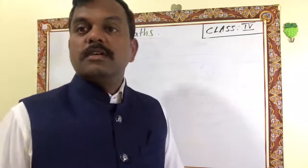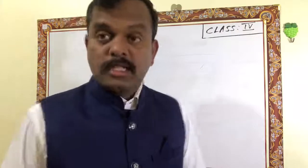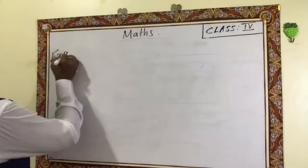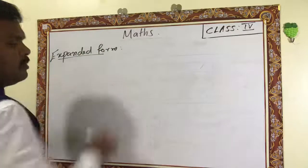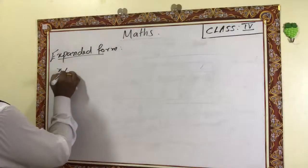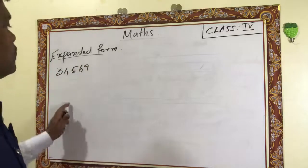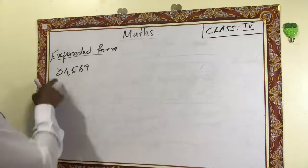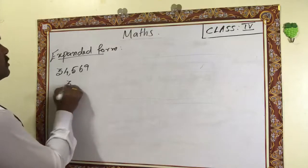Hello students, this is our fourth video of lesson one on expanded form. Let us consider the number 34,569. After the first three digits I have to put one comma — 34,569. This number can give us three parts.